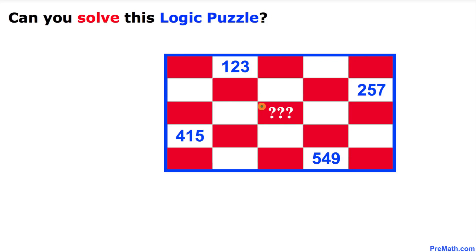Welcome to Pre-Math. In this video tutorial, we have this checkered table as you can see in this figure. We have five rows and five columns grid where we have been given these numbers: 123, 257, 415, 549. Now the question mark is, what number is going to be at this place?